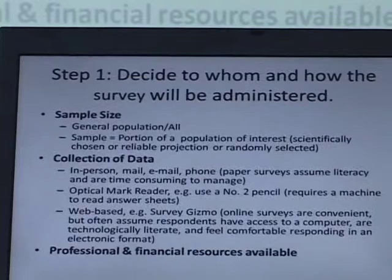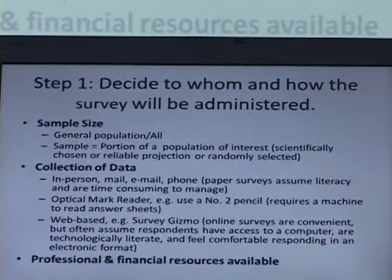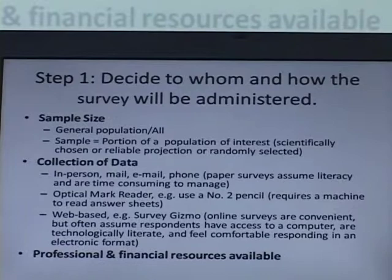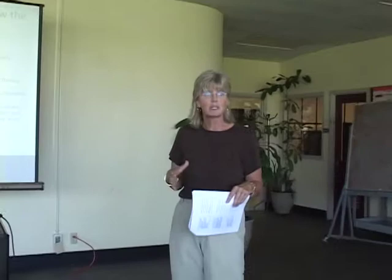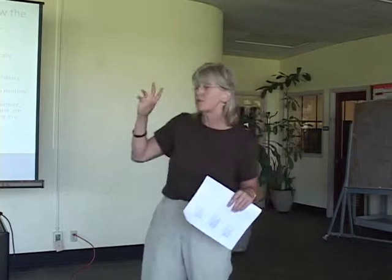Step one: who and how will this survey be administered? The first thing I start with is sample size. Most people think they need to survey everybody, but you don't — you can just take a sample size and that can provide you with enough good information to help you do your outcomes assessment process. So don't think you have to survey everybody that walks in the door. If you have 500 people walking through the door in one semester, you may not want to go through 500 surveys.